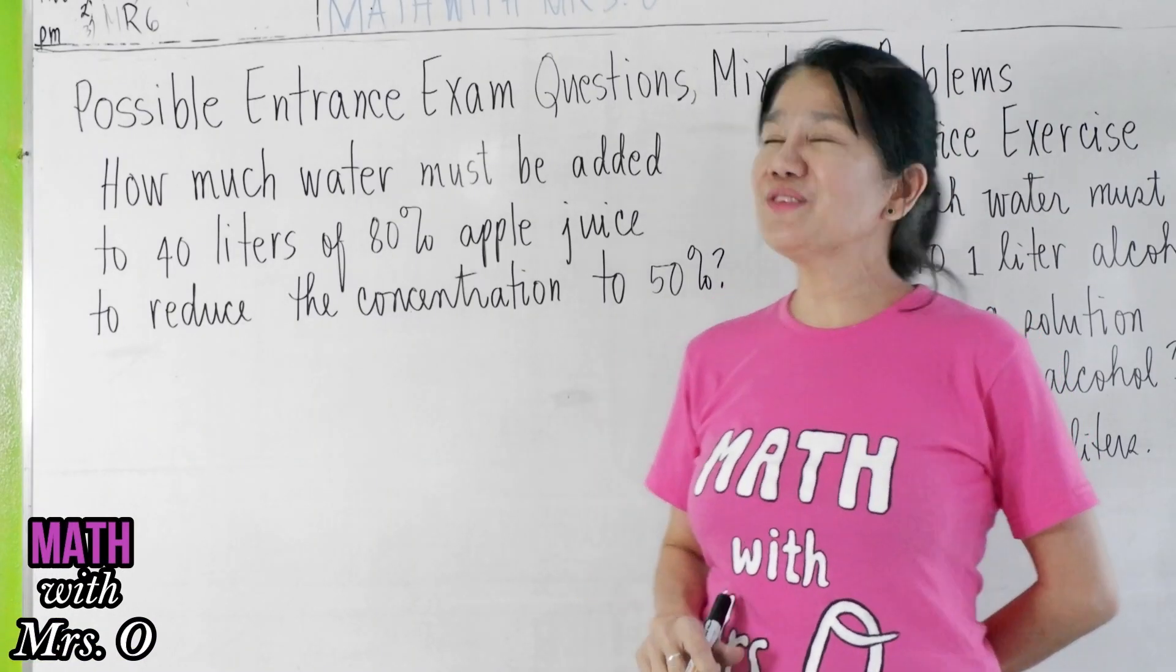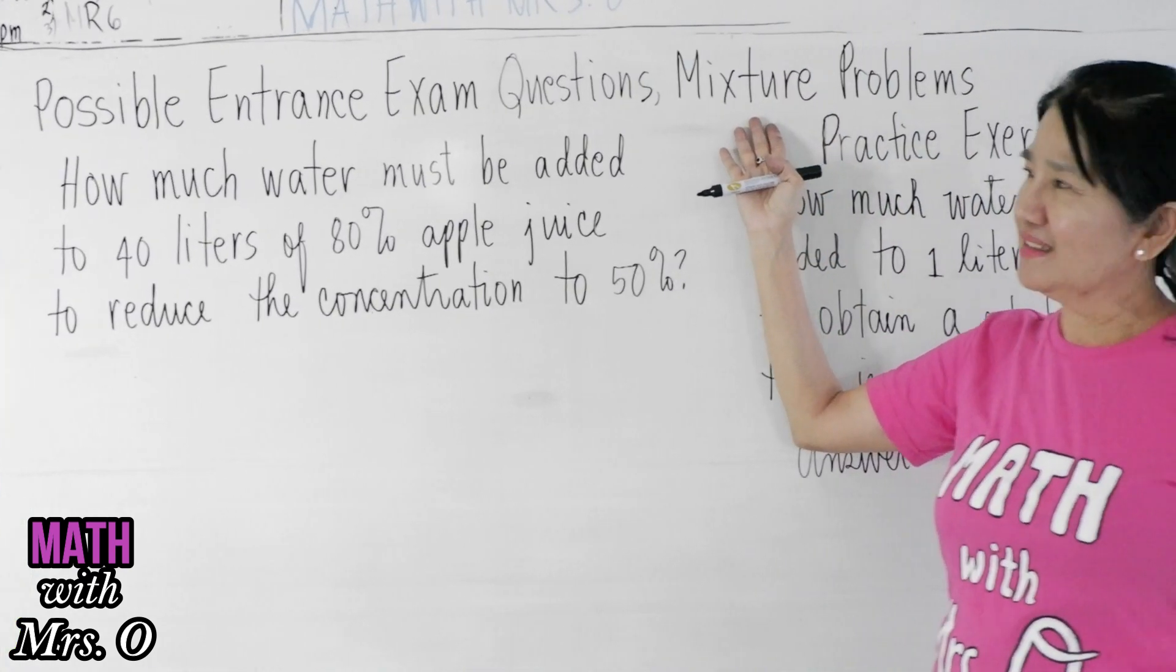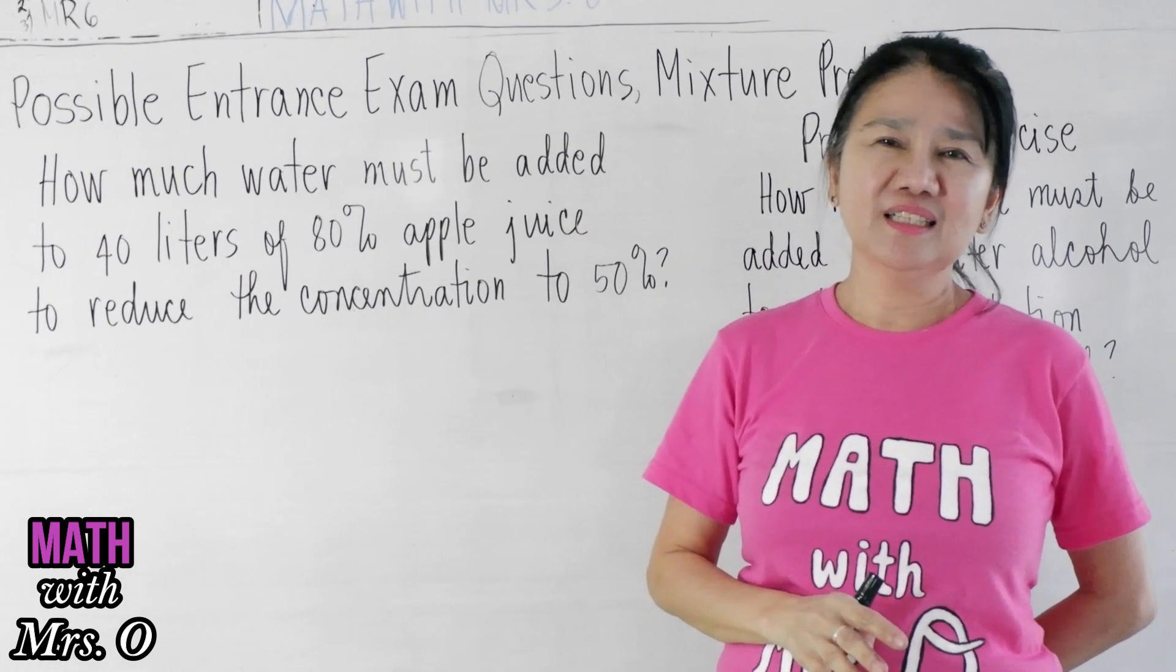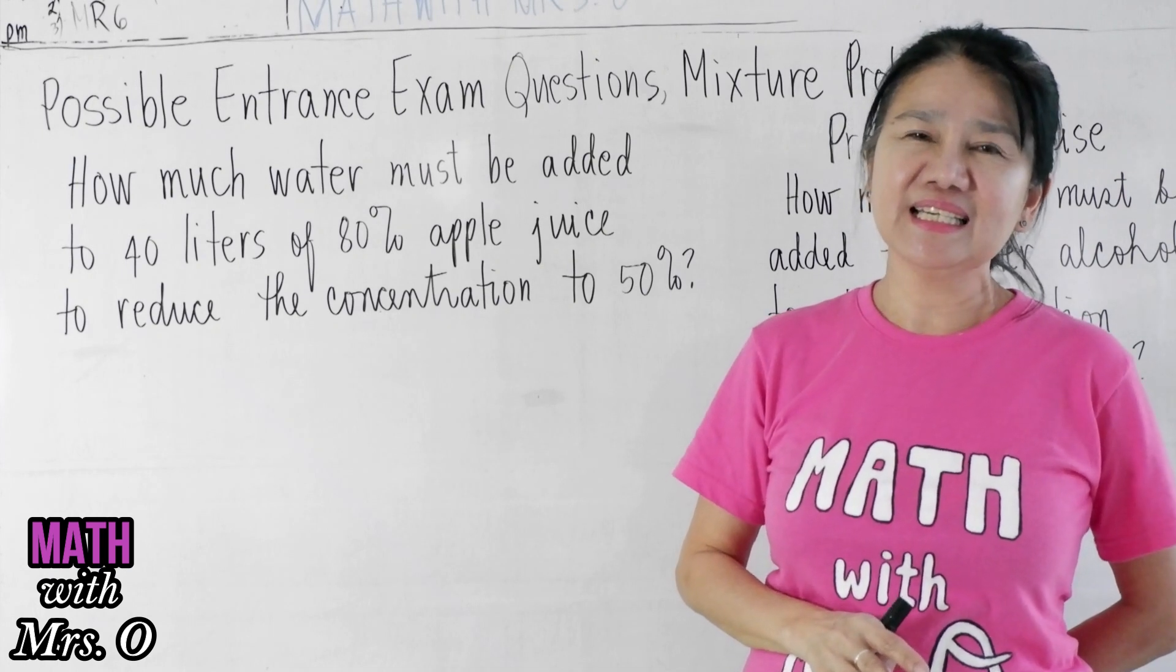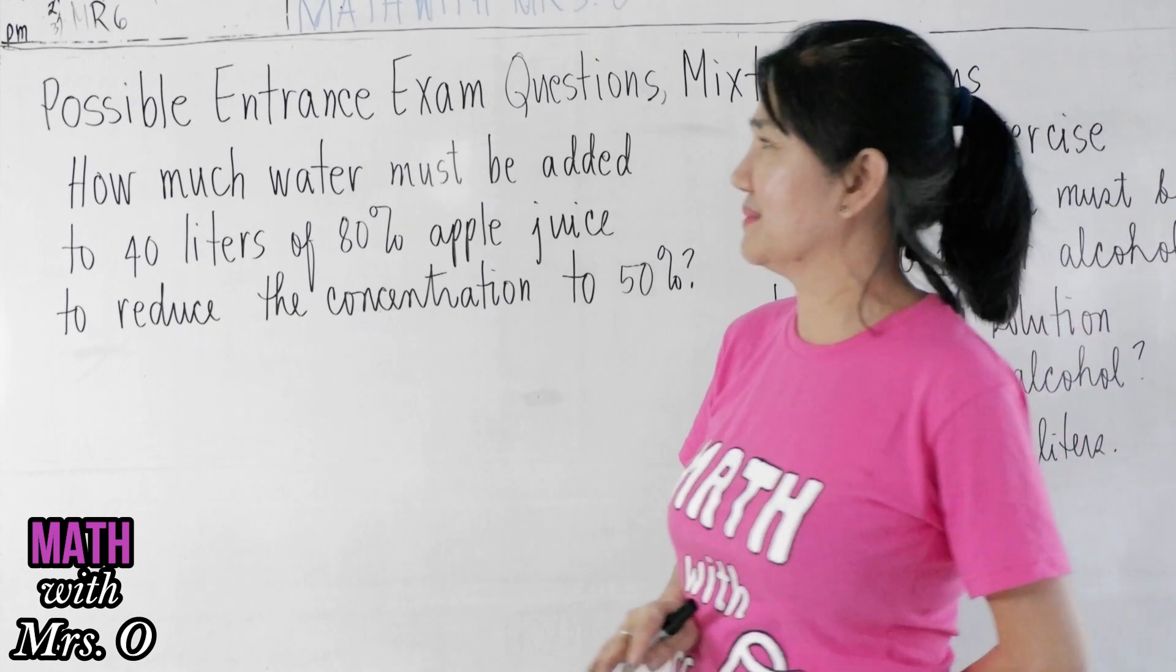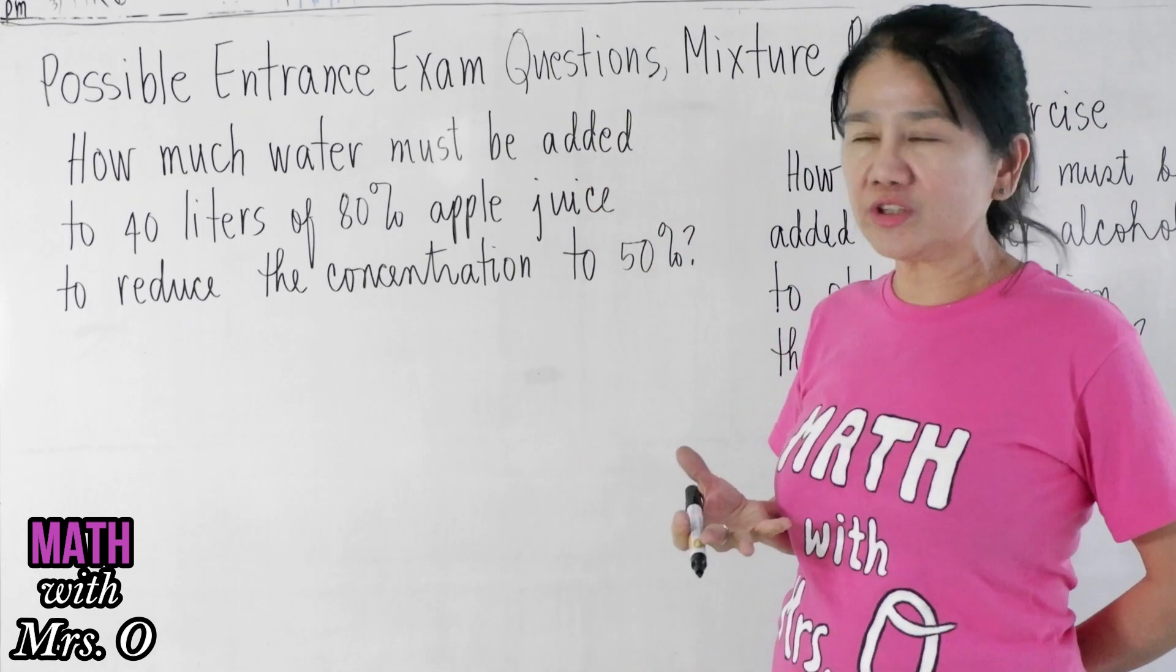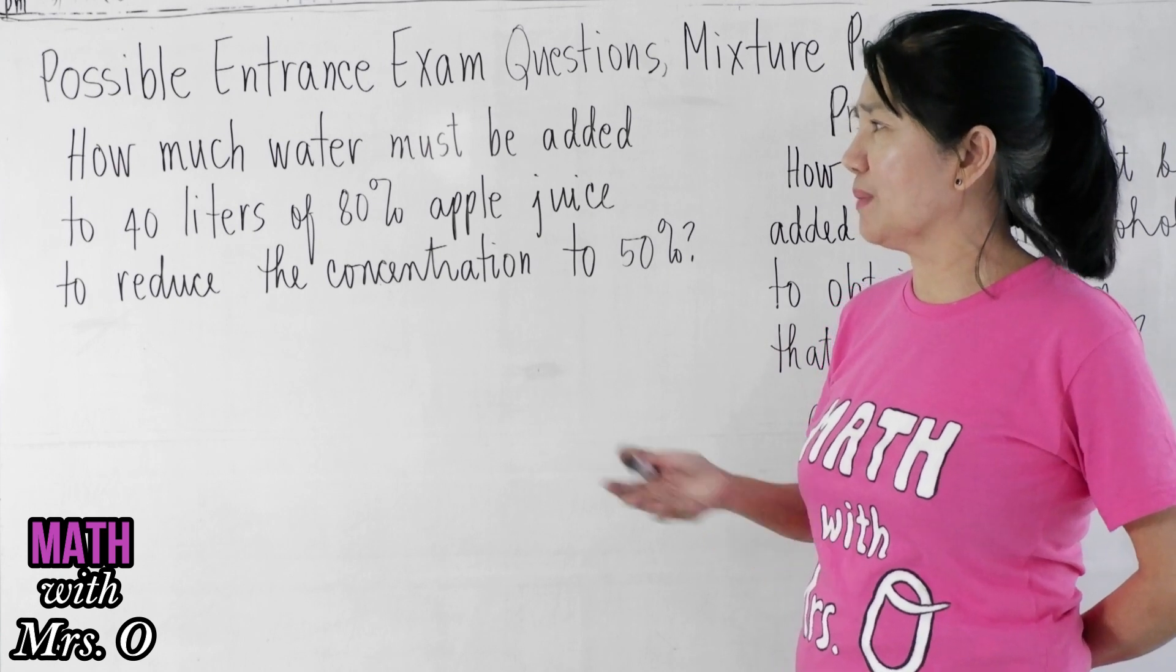Hello, our lesson for the day is mixture problems. These are possible entrance exam questions for science high schools, senior high school, SAT, and college entrance exams. The problem is: how much water must be added to 40 liters of 80% apple juice to reduce the concentration to 50%?